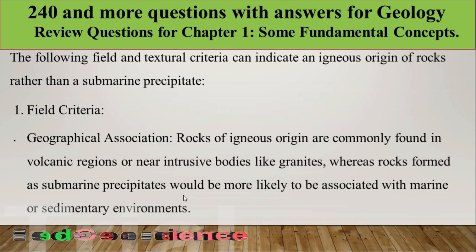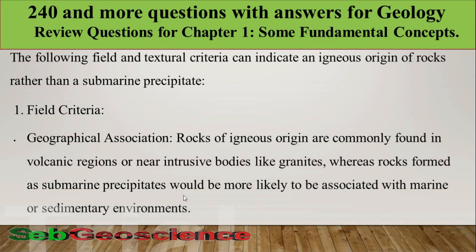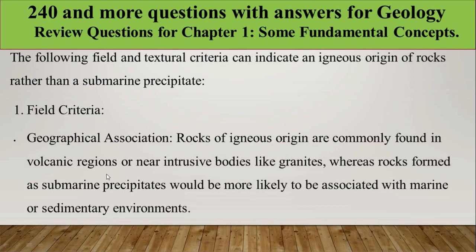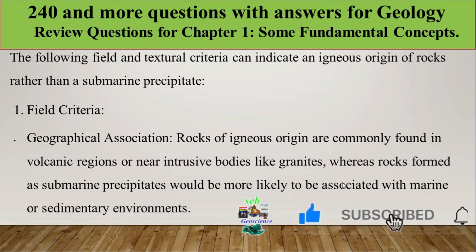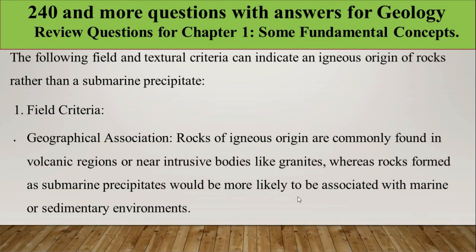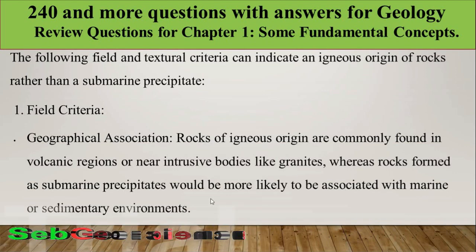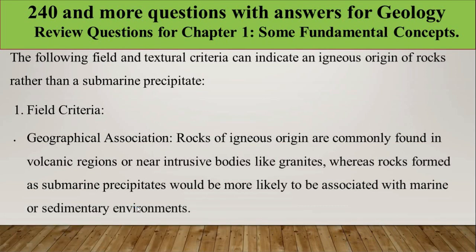The following field and textural criteria can indicate an igneous origin rather than marine precipitation. The first field criterion is geographical association: rocks of igneous origin are commonly found in volcanic regions or near intrusive bodies like granite, whereas rocks formed as submarine precipitates would be associated with marine or sedimentary environments.